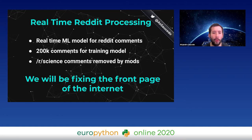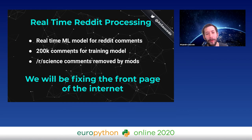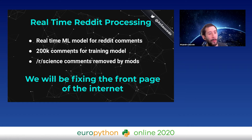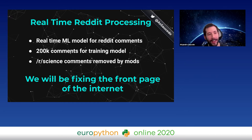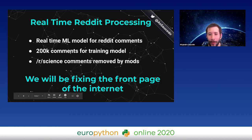Specifically, what we're going to be doing today is fixing the front page of the internet — basically Reddit. We're going to be doing some real-time machine learning for Reddit comments. We have a playground with 200,000 comments from r/science that we'll use to train a model. These are comments that have been removed by moderators, so we're training a model that cleans the internet of bad language — of course, it's never easy in such a wild west.